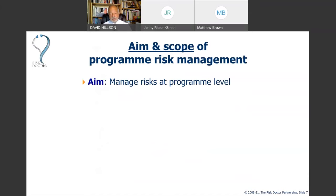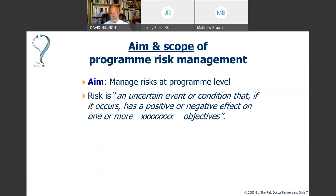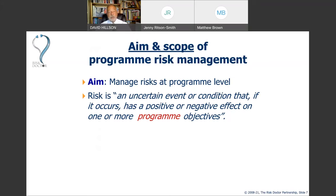The aim of programme risk management is to manage risk in programmes. Using the PMI definition, risk is an uncertain event or condition that if it occurs has a positive or negative effect on one or more objectives. By changing the type of objectives we're interested in, we change the type of risk we're considering. A project risk affects project objectives; a programme risk affects programme objectives — in the same way that strategic risk affects strategic objectives, personal risk affects personal objectives, and financial risk affects financial objectives.